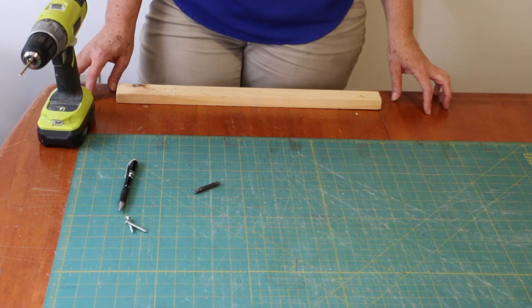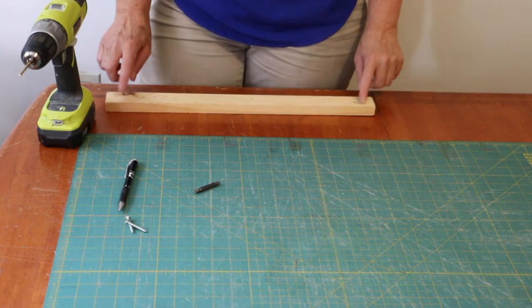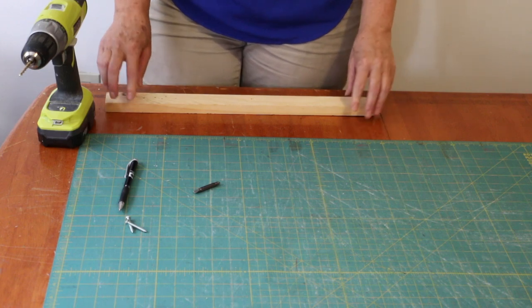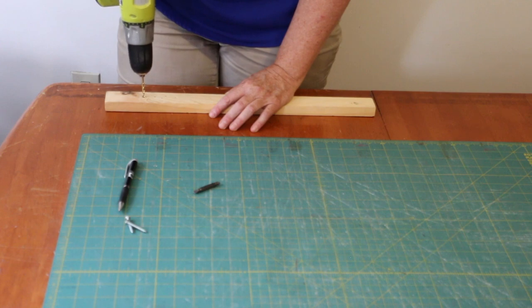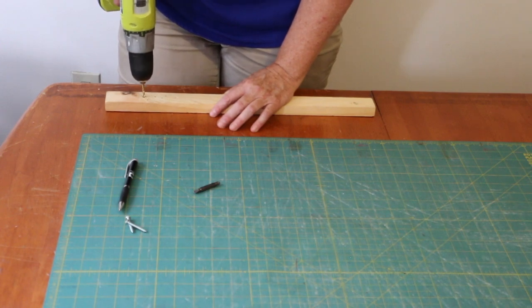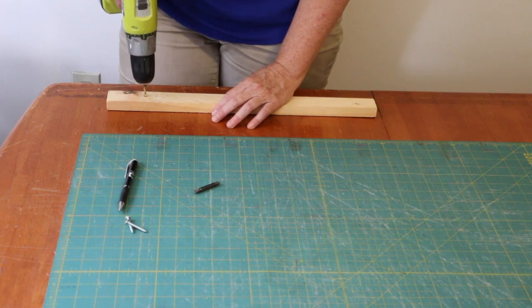I'm just going to screw this strip right into the surface of the table. With my drill, I'm going to drill a guide hole and I'm going to go far enough down into the table that the screw can go down into the table.